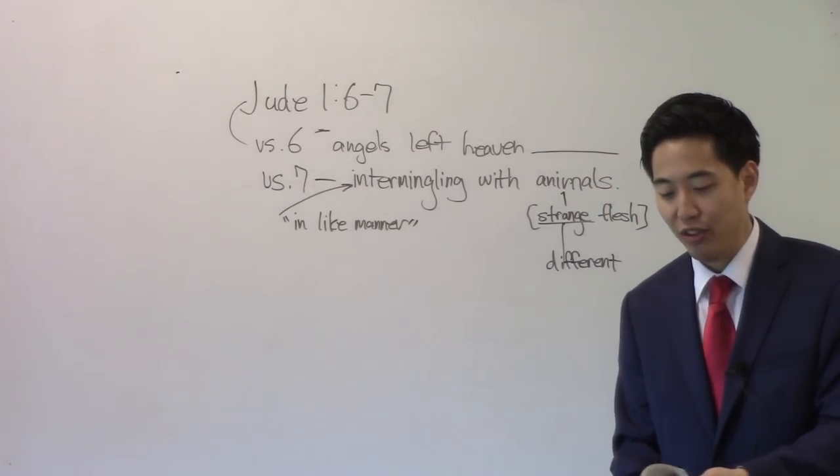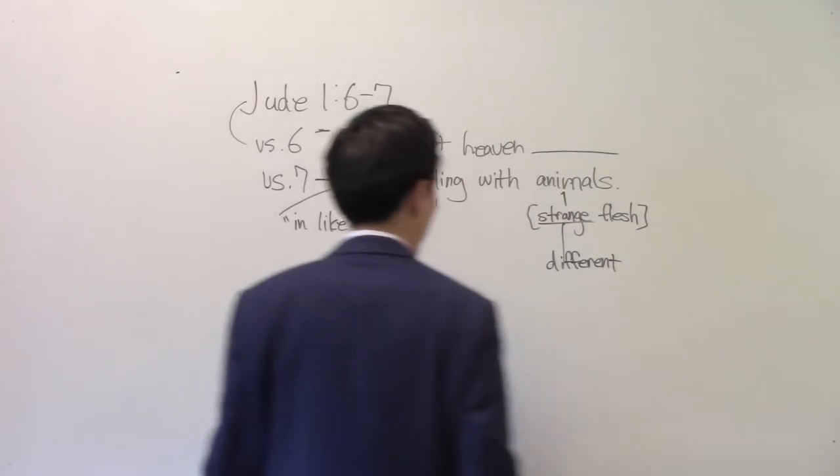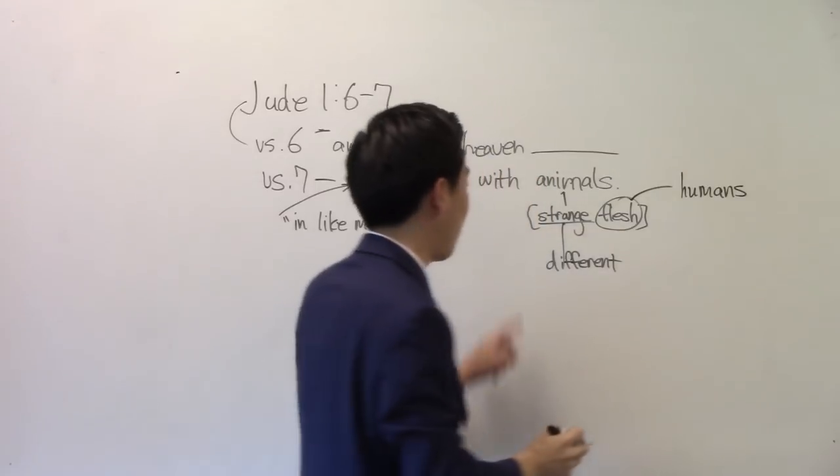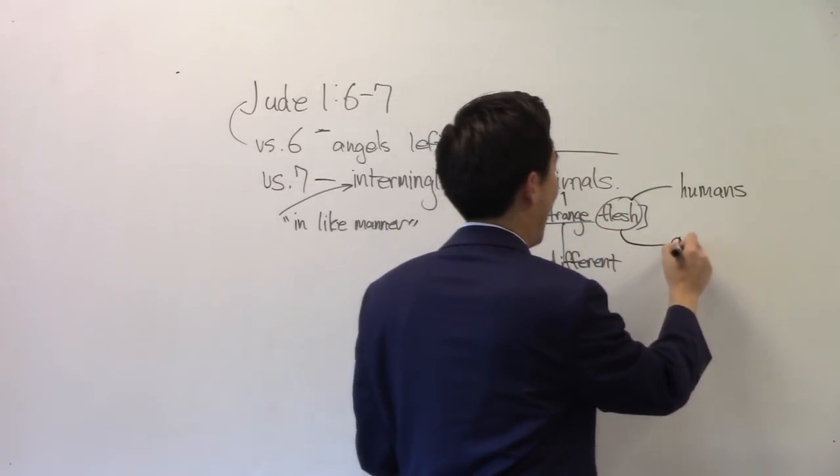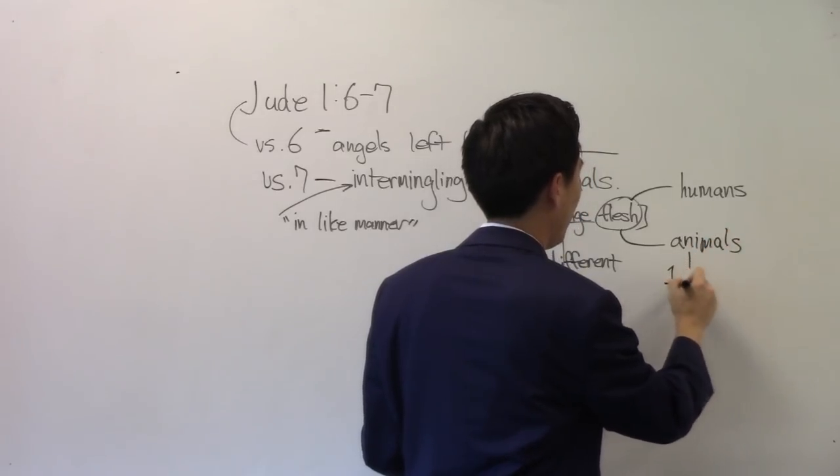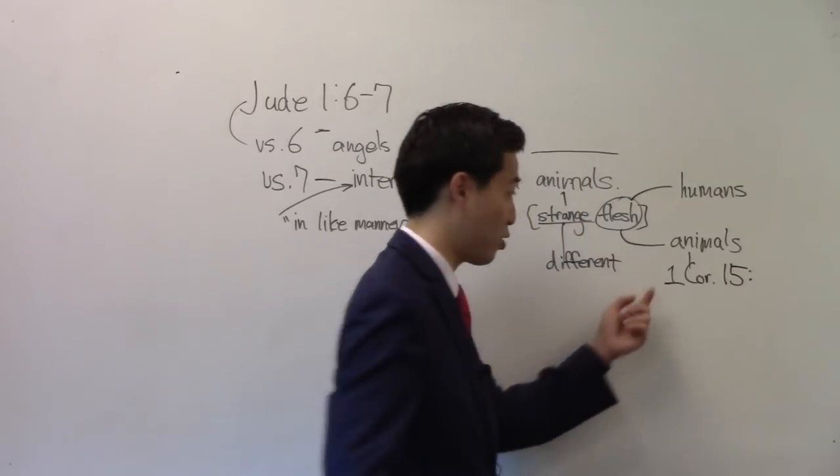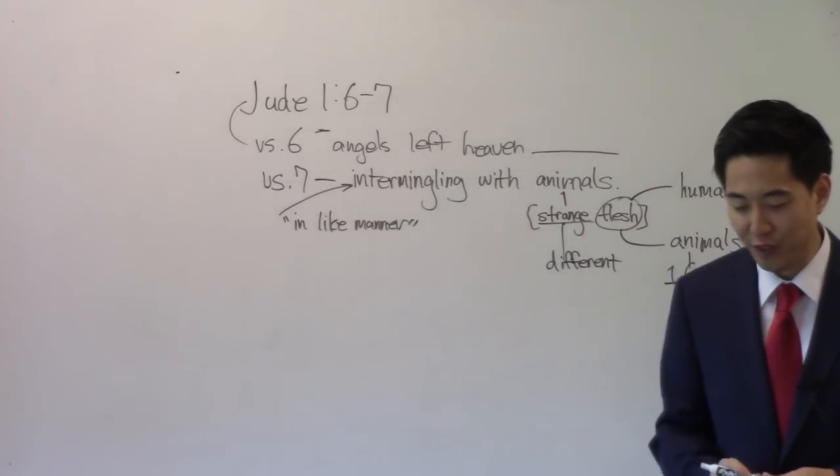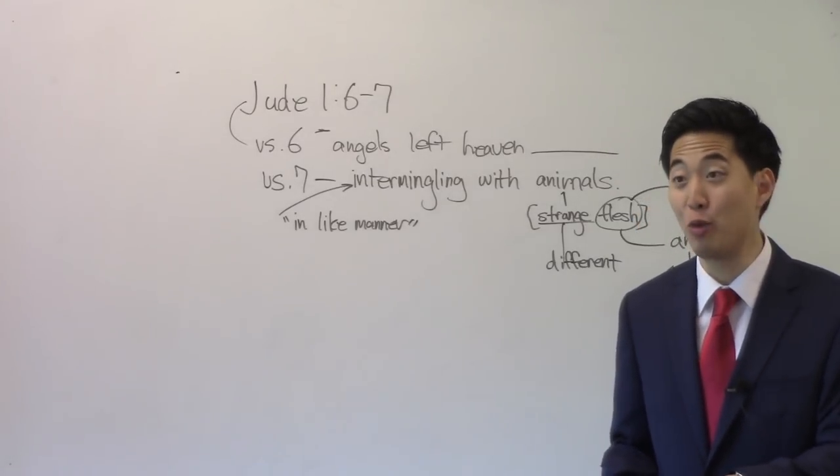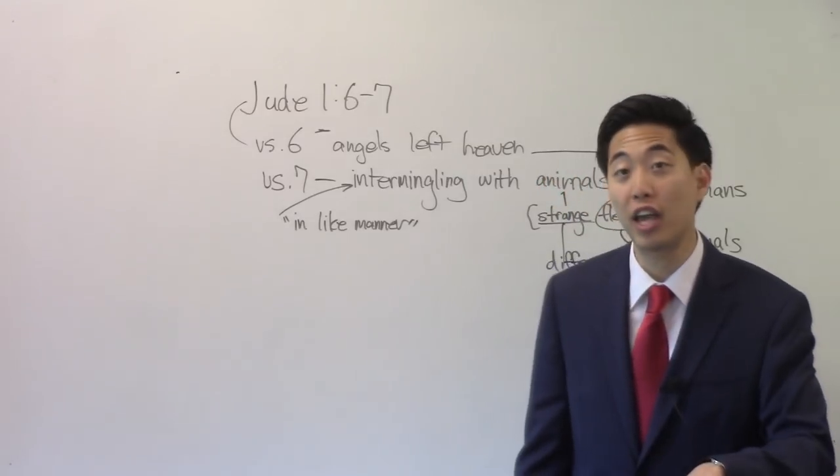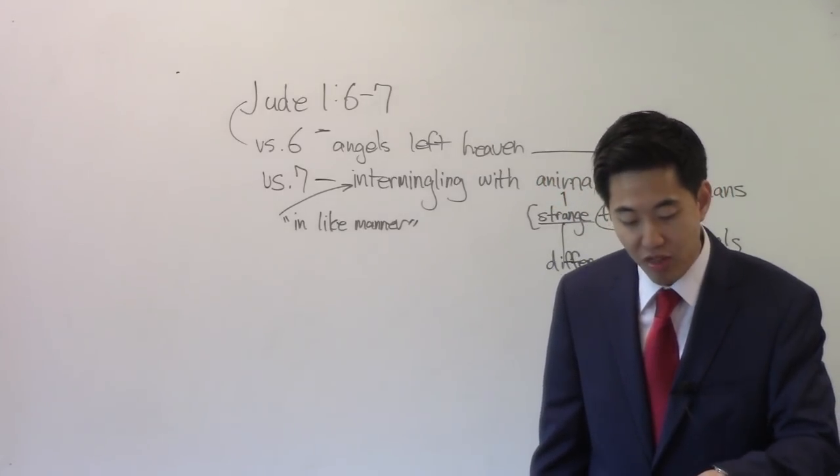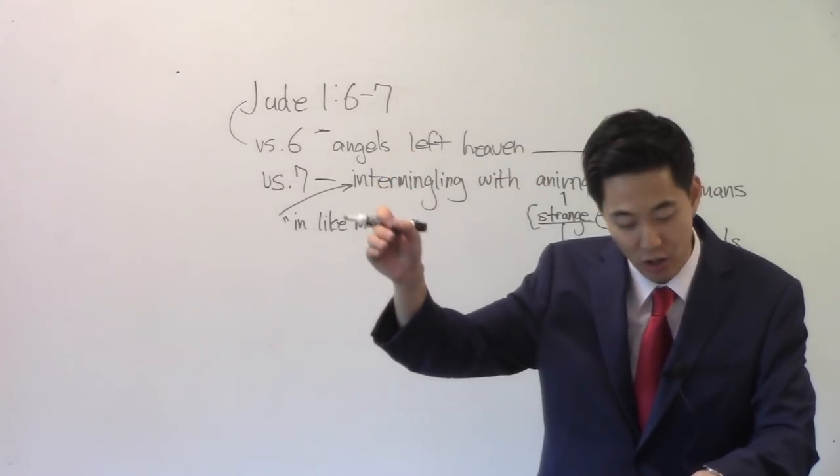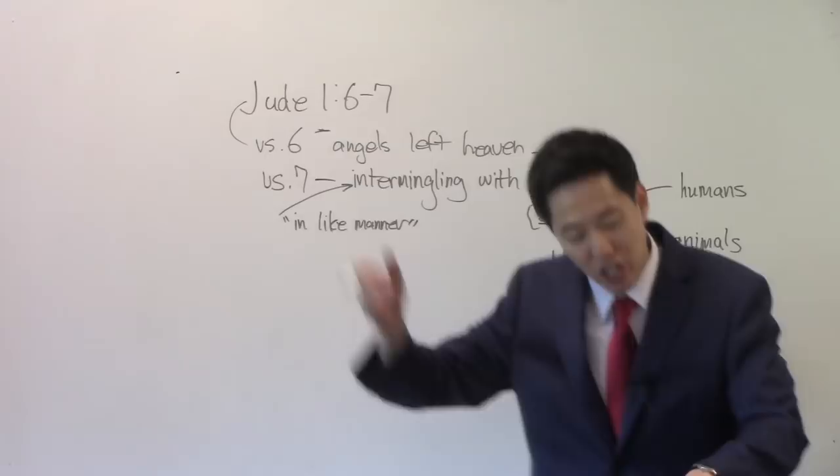It shows different flesh. First Corinthians 15:39. All flesh is not the same flesh. But there is one kind of flesh of man, another flesh of beasts, another of fishes, and another of birds. See that? These wicked angels were going after different flesh.